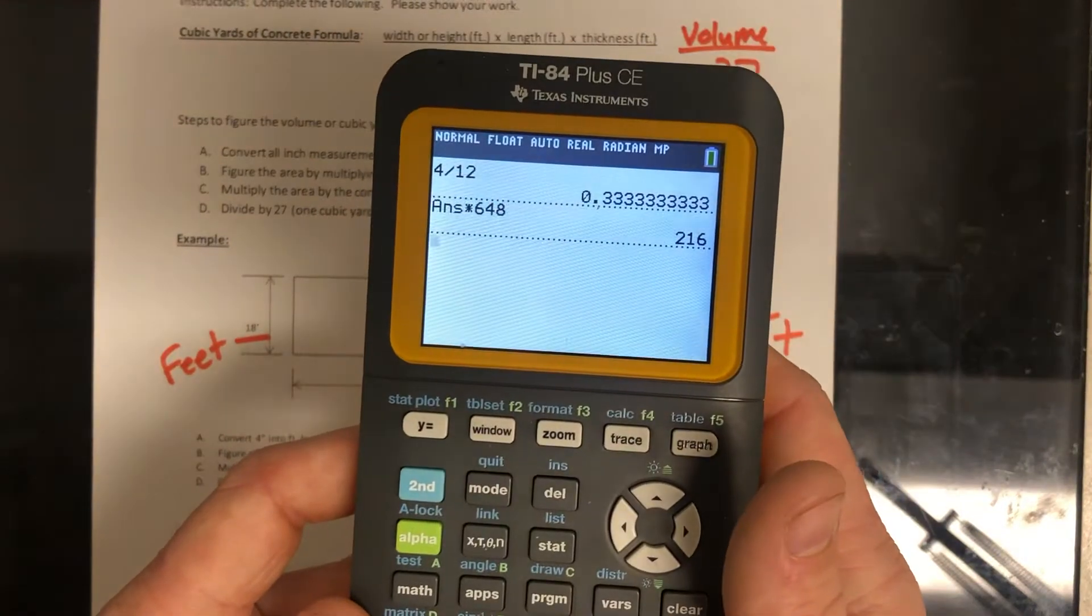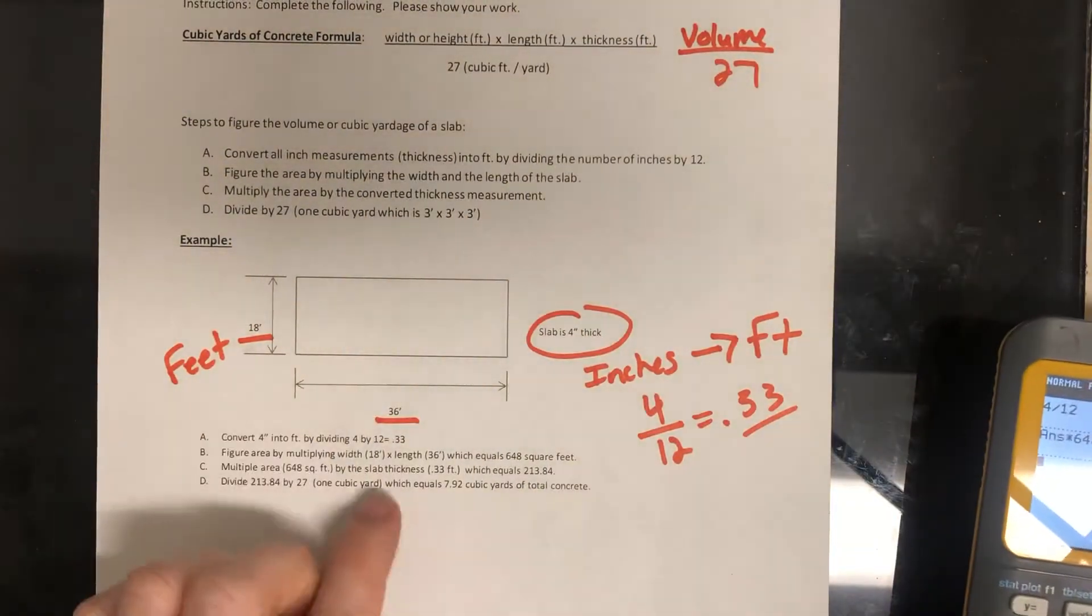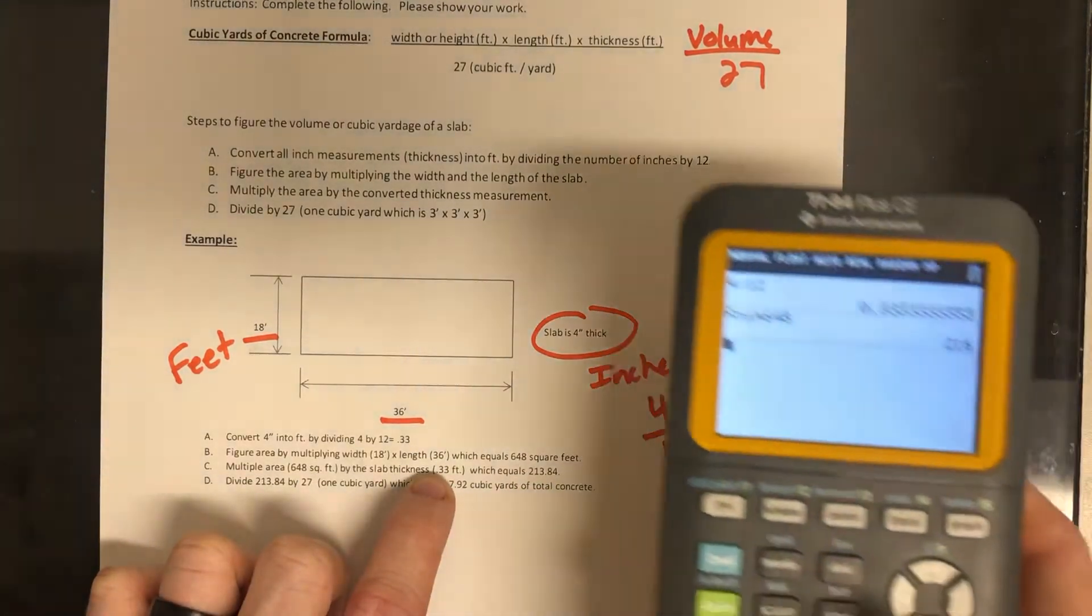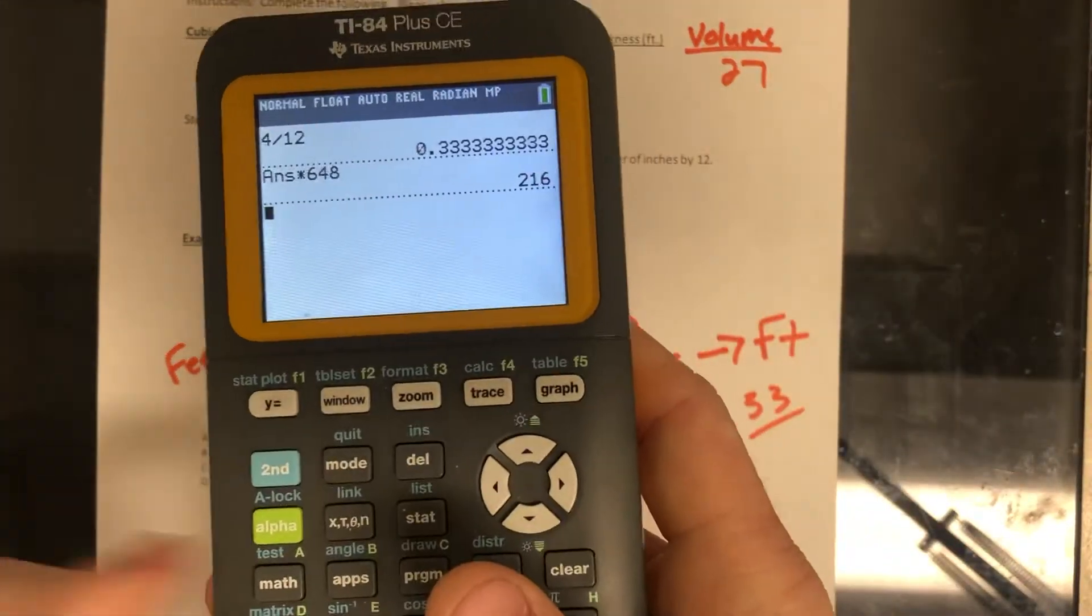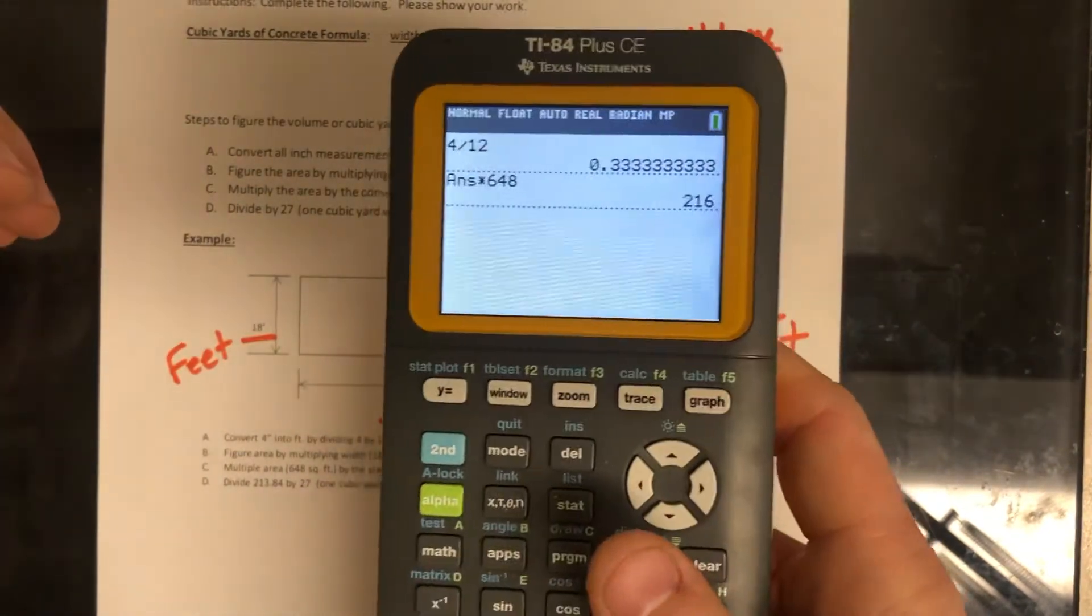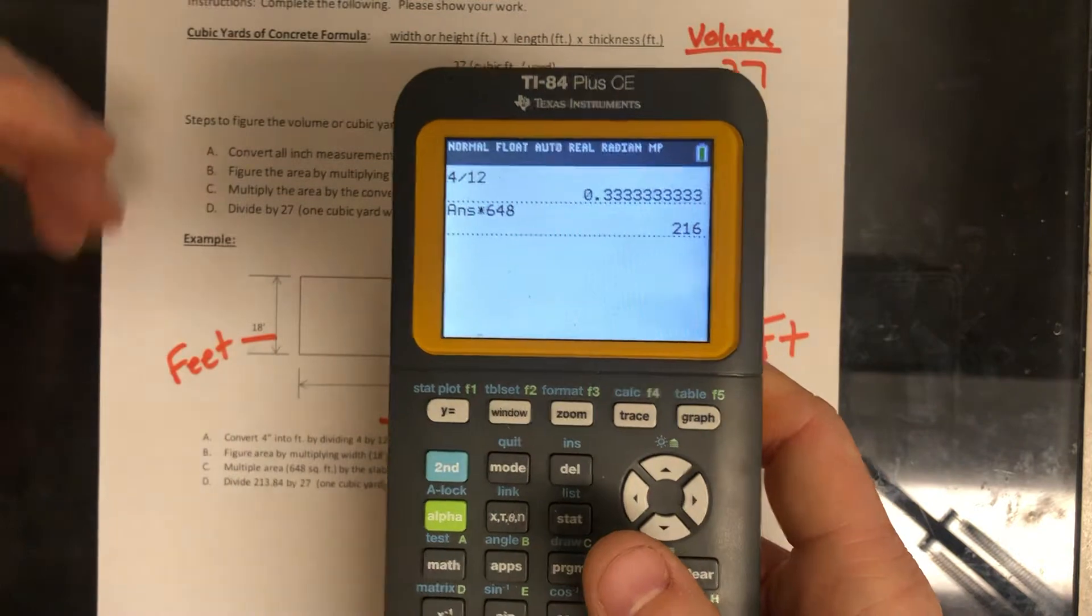So 216 is the area of this particular slab. On the sheet, it says 213.84. That's because they just did 0.33 instead of all those threes up here. And you can see how much of a difference that makes. That's why I want you to wait to the very end to round.